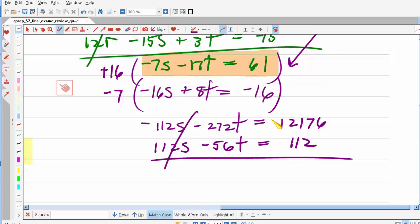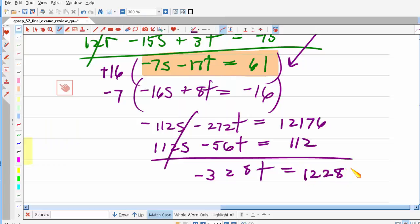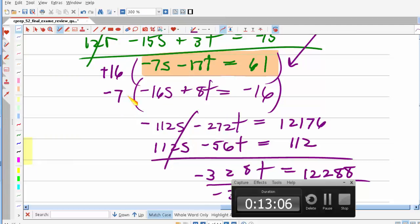Add those together, I get negative 328t equals, and I'm going to use my calculator so I don't screw this up. So it's 12,176 plus 112, 12,288. And now I'm going to pray that I end up with an integer when I solve this. Divide by negative 328. It's going to be the moment of truth. I just think my odds are probably 50-50. I don't know if I can have made it all the way through here without making a clerical error somewhere. And I did. Okay, I'm going to pause this. Go find my error and then we'll resume.